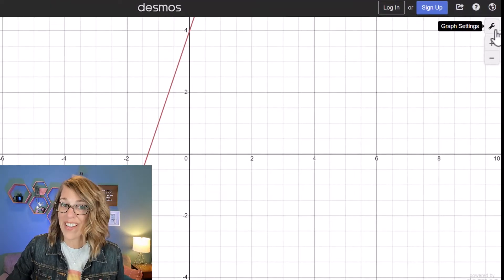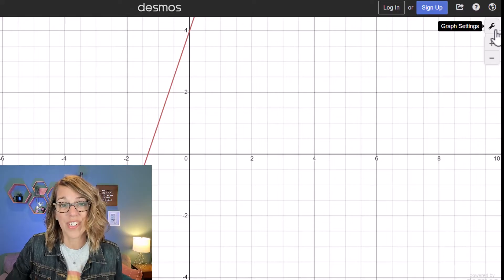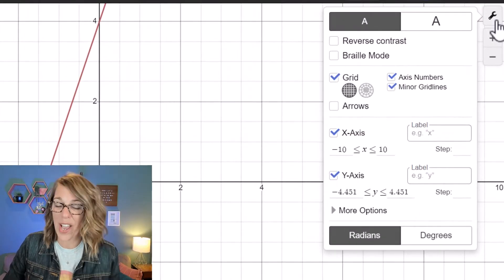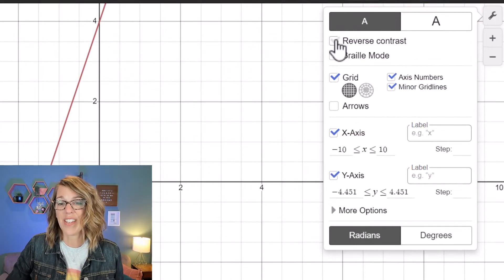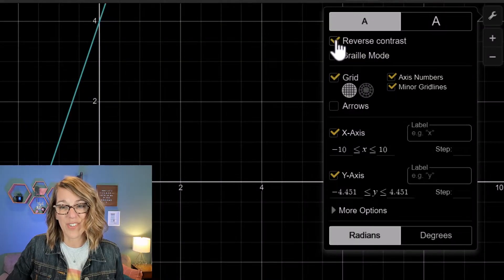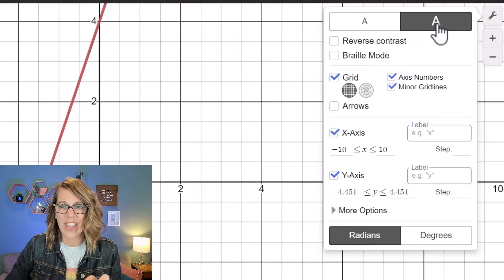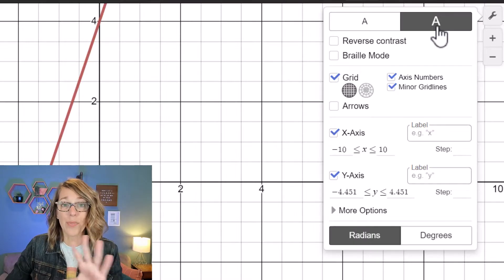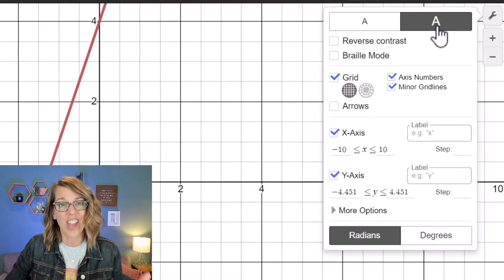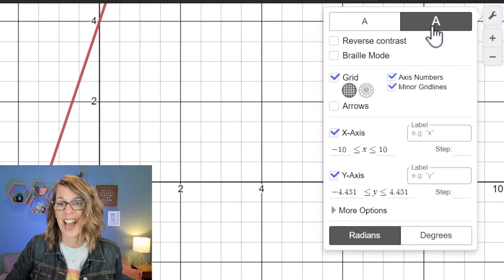Now over here in the upper right hand corner I've got lots of tools so I can see this graph exactly how I want to. To change those settings you can start with reversing the contrast to get it into dark mode. You can also darken everything by clicking on the A. This works great if you're projecting the image, say you're teaching a class or something.